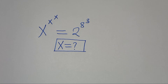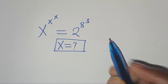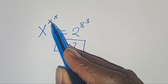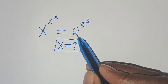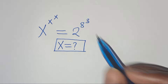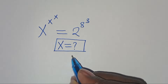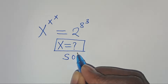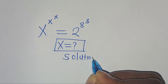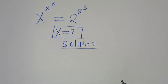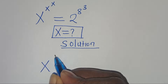Hello everyone, you're welcome to solve this nice algebra problem: x to the power of x to the power of x, equals 2 to the power of 8 to the power of 3. So what is the value of x? Let's provide a solution.